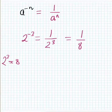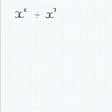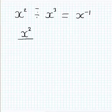To understand and revise how this law works, consider the problem x to the power of 2 divided by x to the power of 3. Using the second index law — when we divide with the same bases, we subtract our powers — our base x stays the same, and we get 2 take away 3, which is negative 1. We can also rewrite this problem as x² over x³, which is the exact same thing just written in a different form.